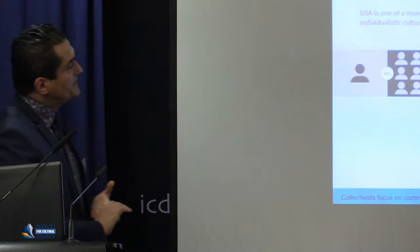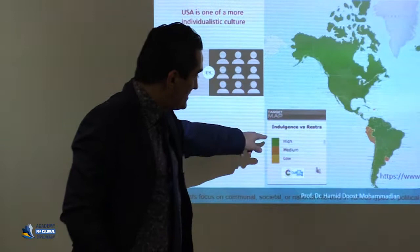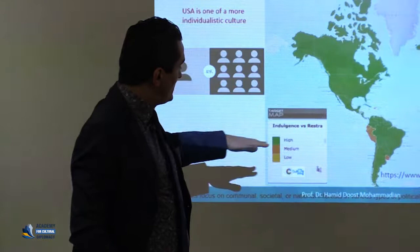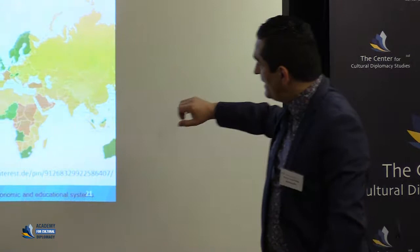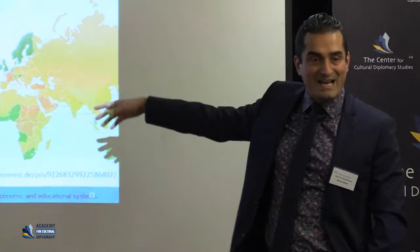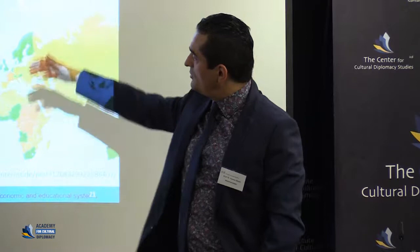Here we have a map showing which countries are more collectivist or individualist. Green colors show a high individualism index, orange is medium, and yellow is low — meaning yellow countries are more collectivist. In Asia most countries are more collectivist, as are most Arab countries in Africa. Some like Saudi Arabia and Turkey are in the middle. In South and North America most are individualist.